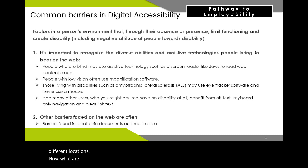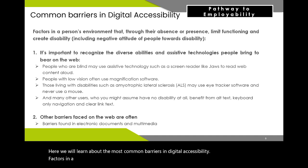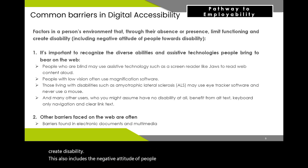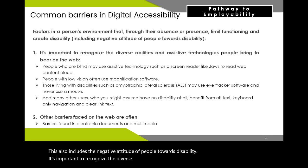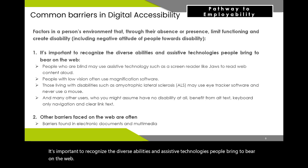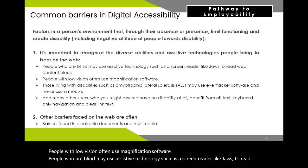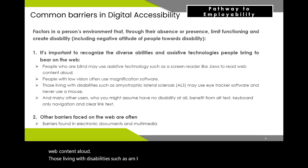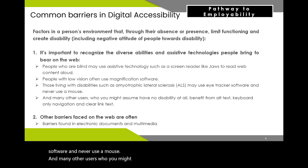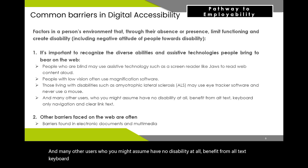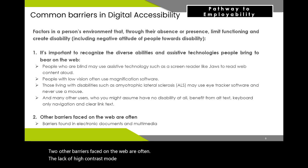What are barriers in digital accessibility? Barriers include factors in a person's environment that, through their absence or presence, limit functioning and create disability. This also includes the negative attitude of people towards disability. People with low vision often use magnification software. People who are blind may use assistive technology such as a screen reader like JAWS to read web content aloud. Those living with disabilities such as ALS may use eye tracker software and never use a mouse. Many other users benefit from alt text, keyboard-only navigation, and clear link text. Two other common barriers are lack of high contrast mode and lack of voice recognition software.